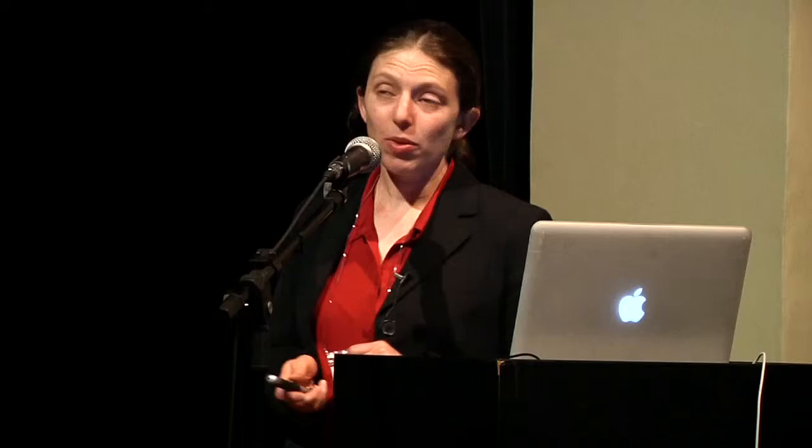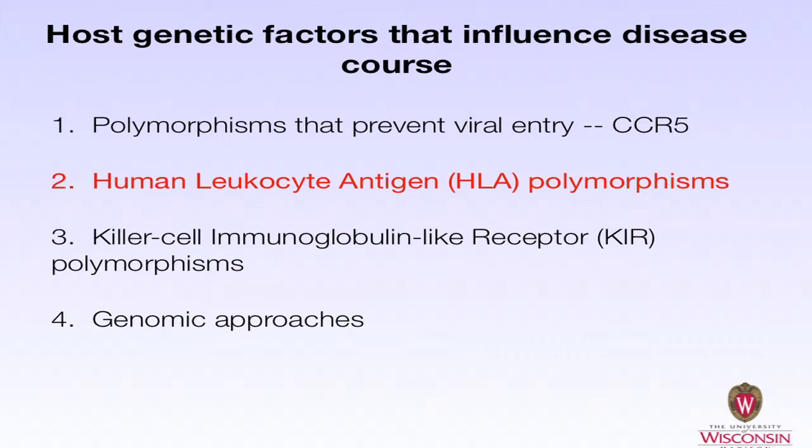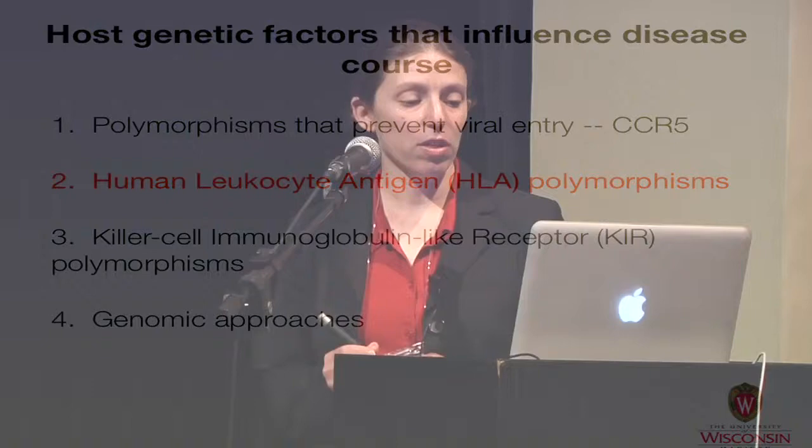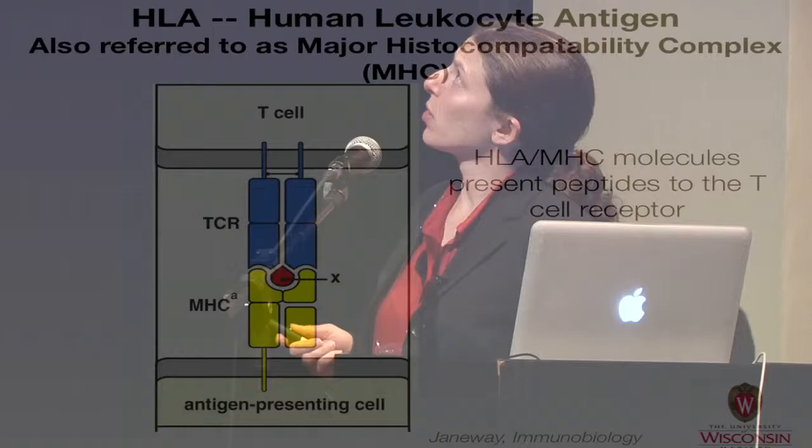That's what I wanted to cover with respect to CCR5 polymorphisms. Now I'd like to move on to polymorphisms in the human leukocyte antigen that are associated with control and susceptibility. As many of you know, the human leukocyte antigen is also referred to as the major histocompatibility complex, or HLA. It is located on antigen-presenting cells and presents peptides to the T-cell receptor of a T cell.